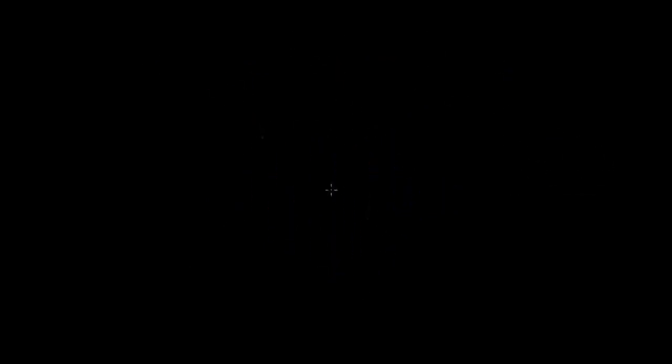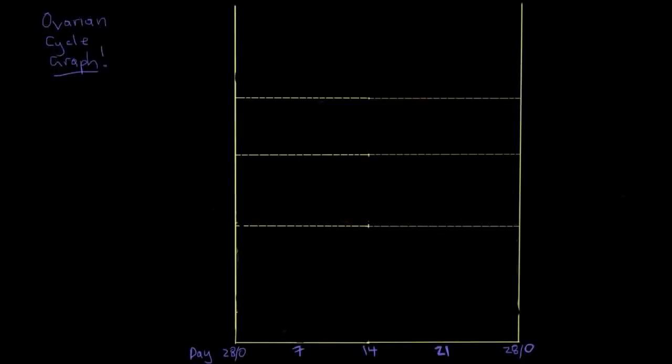There's this handy graph that we'll refer to as the ovarian cycle graph that I guarantee you'll see if you're studying female reproductive physiology. It's actually really quite helpful in understanding and visualizing what exactly is going on in the body during each reproductive cycle. So this is the skeleton of the graph here, just the axes. I'll orient you to the axes first, and then we'll look at what information the graph actually contains.